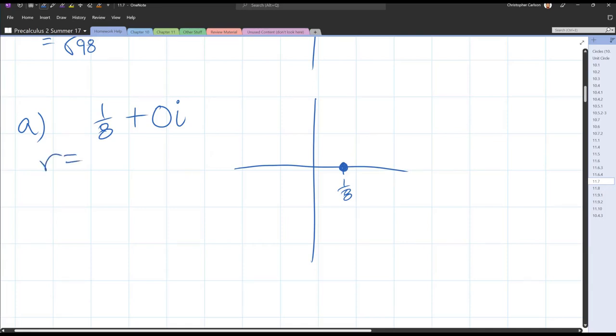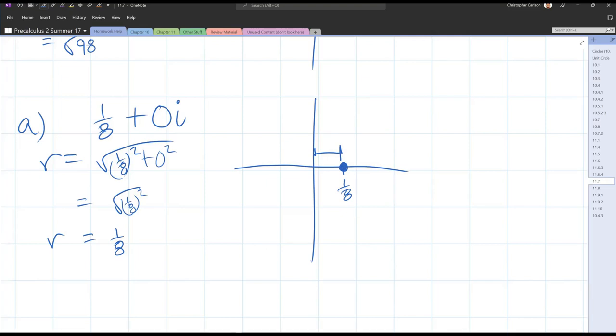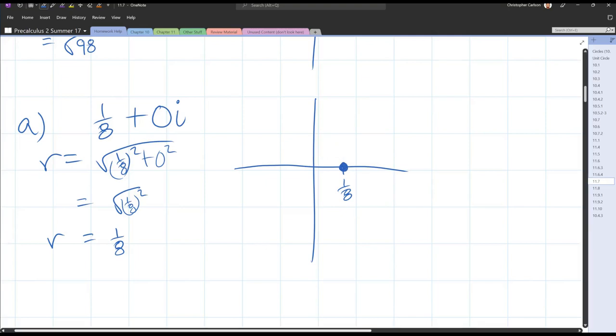What's our radius? We could use the formula: one eighth squared plus zero squared. So we have square root of one eighth squared, which is one sixty-fourth. But you can cancel the square and the square root and get one eighth. Why is it one eighth? That's how far we went over, one eighth. We didn't go up at all, so you could do this visually.